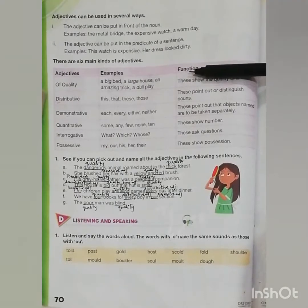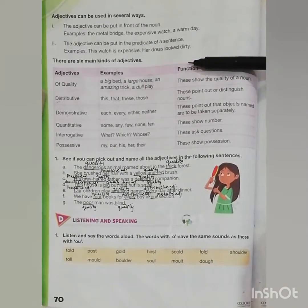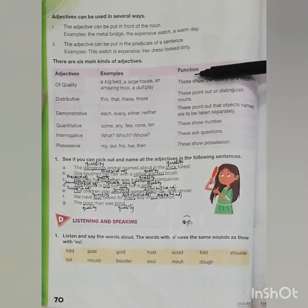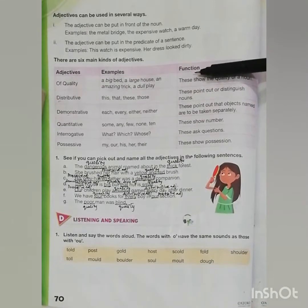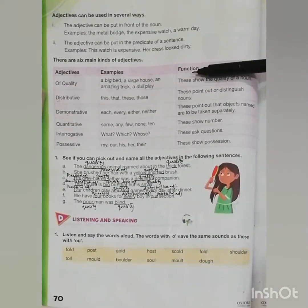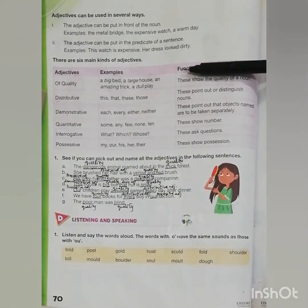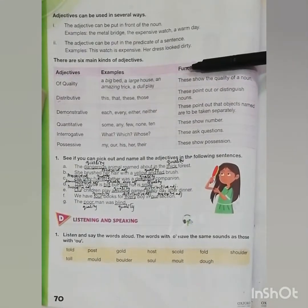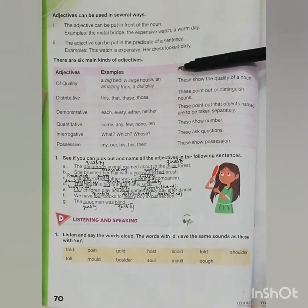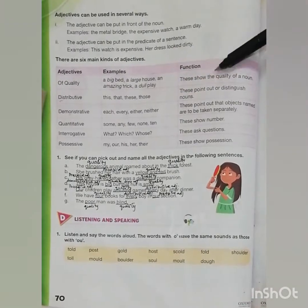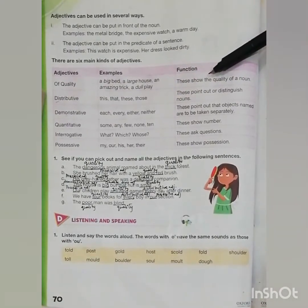There are six main kinds of adjectives. We can read about all six kinds in the box. First, adjective of quality — for example: a big bed, a large house, an amazing trick, a dull play. These show the quality of a noun.